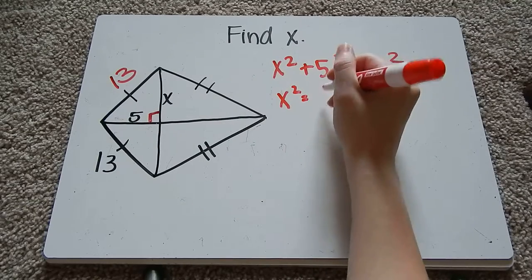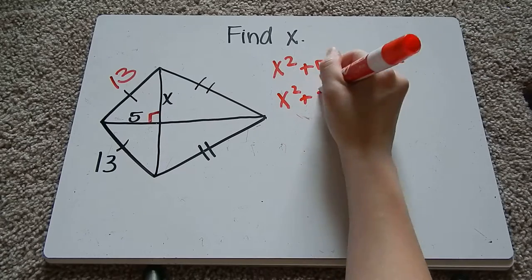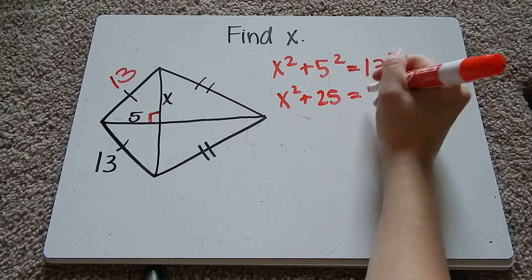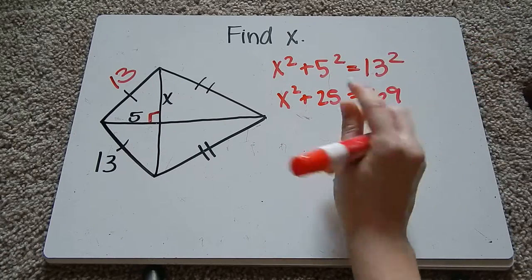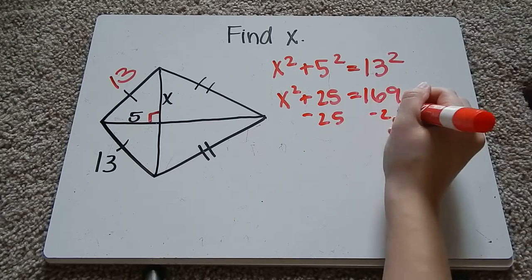Then we're going to solve. So I'll go ahead and square these numbers. x squared plus 25 equals 169. Subtract 25 from both sides.